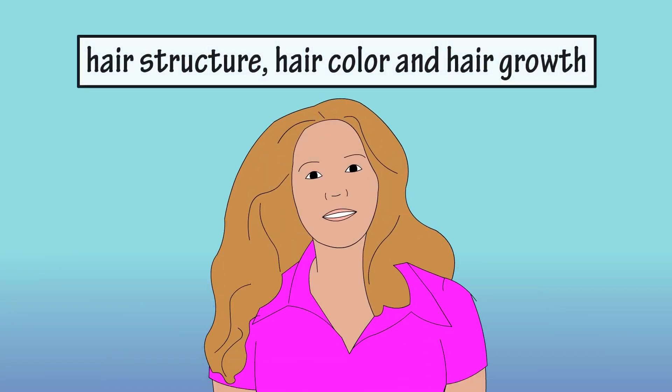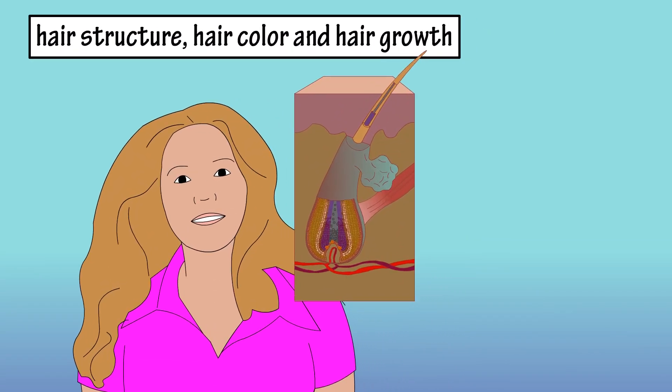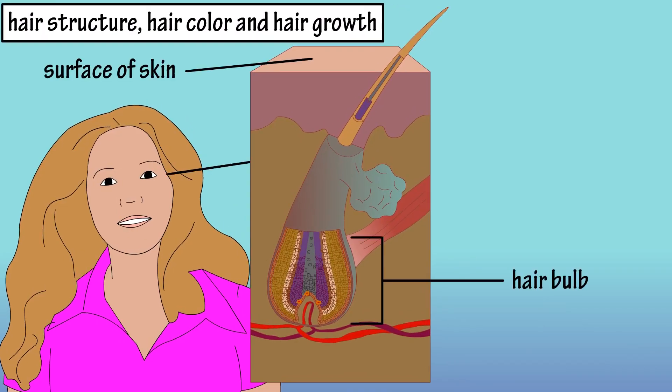Hair Structure, Hair Color, and Hair Growth. Hair consists of three main sections: the hair bulb, the hair root, and the hair shaft.